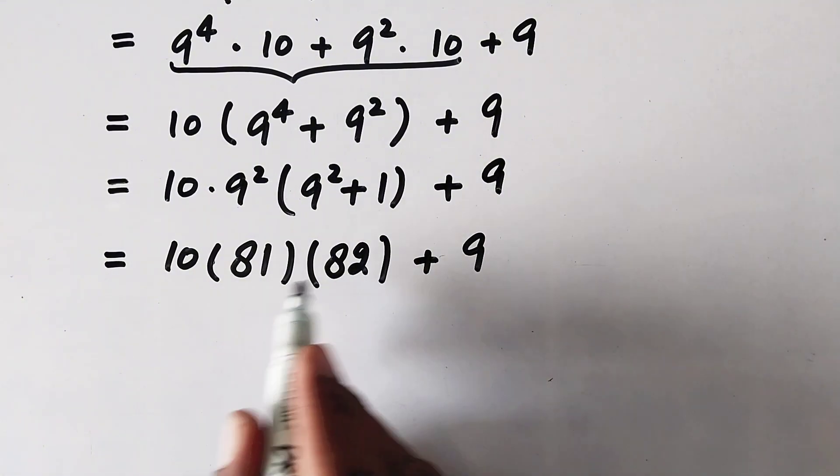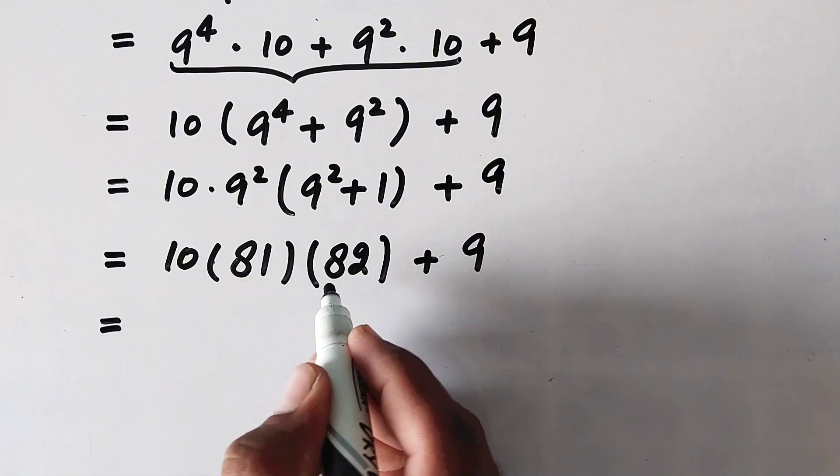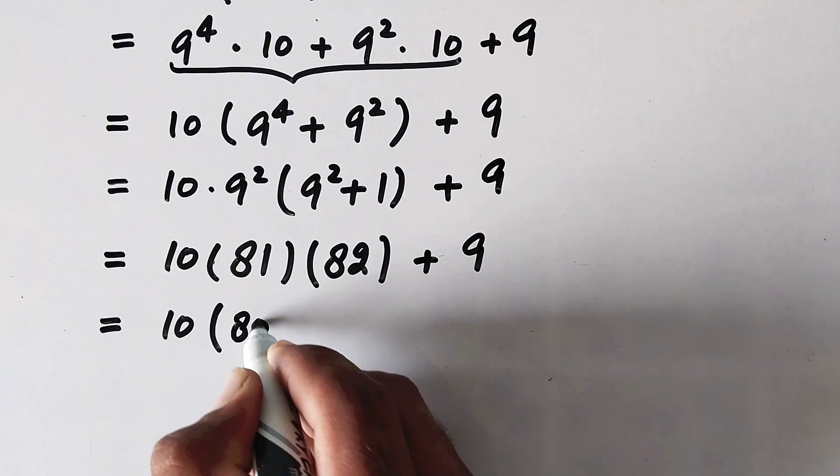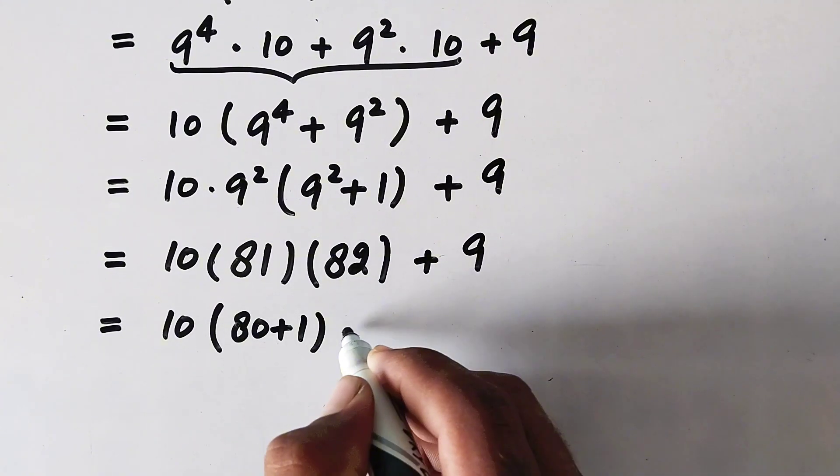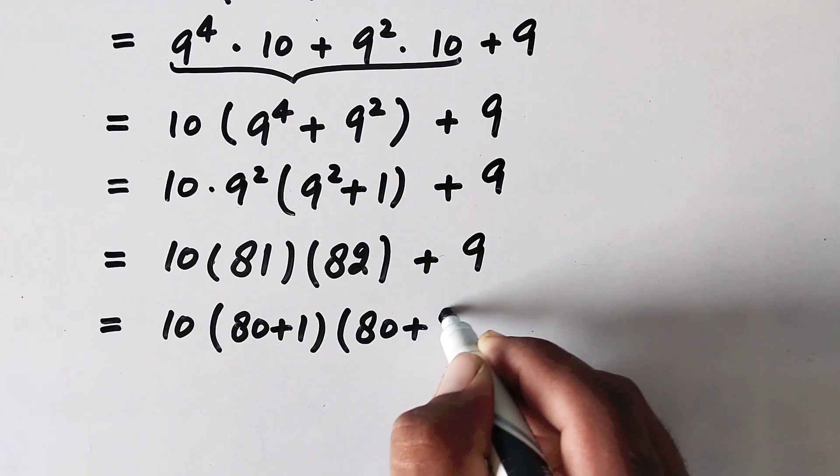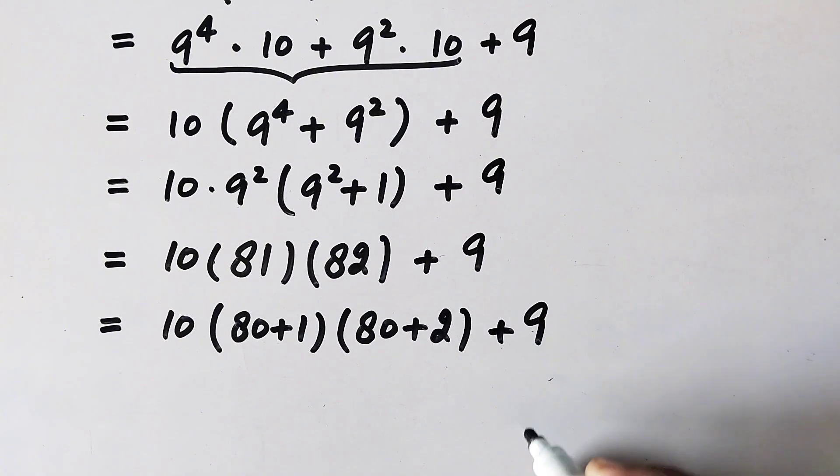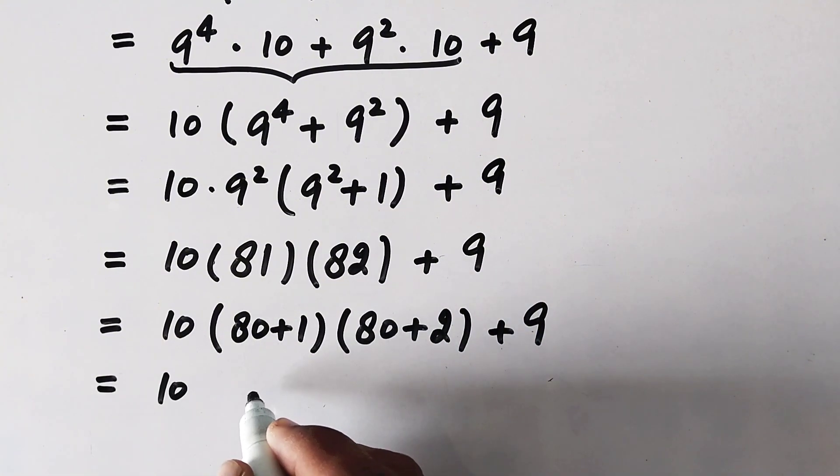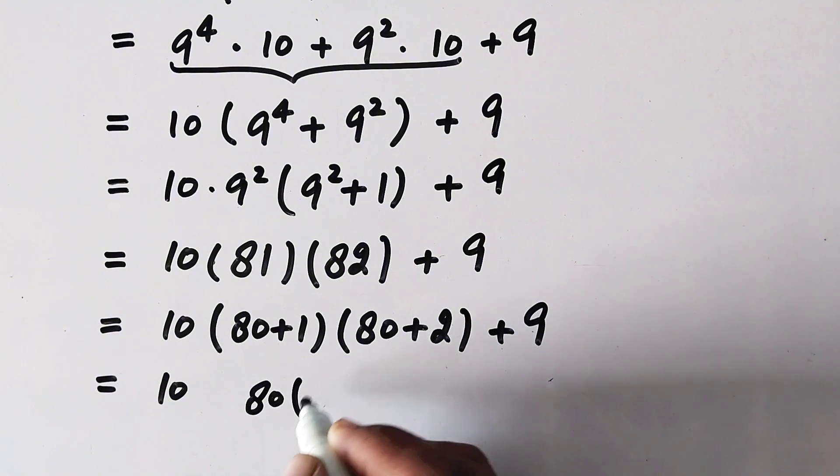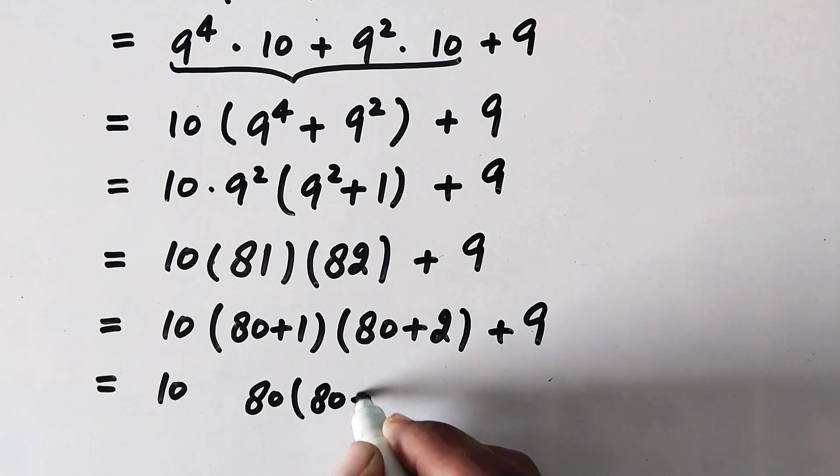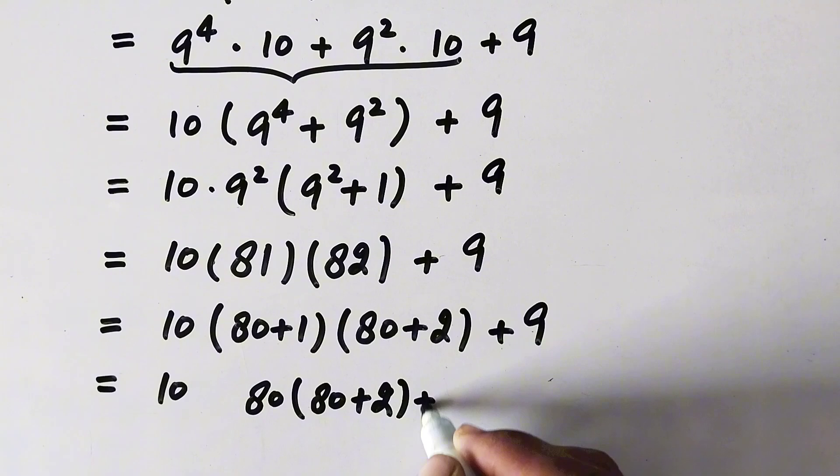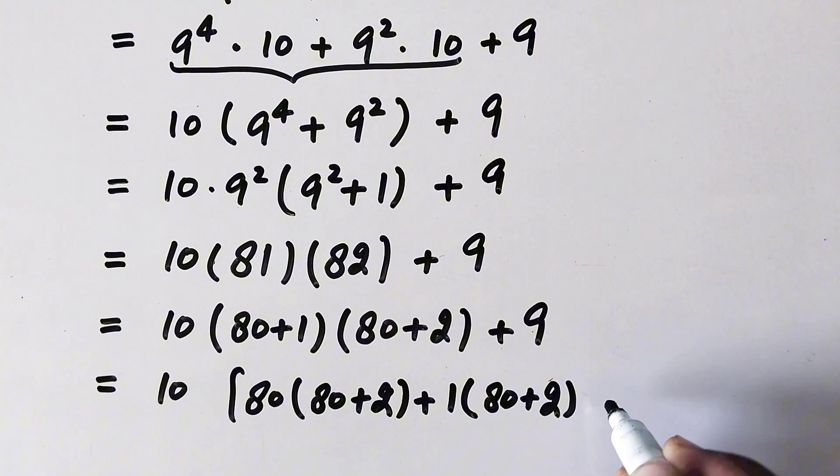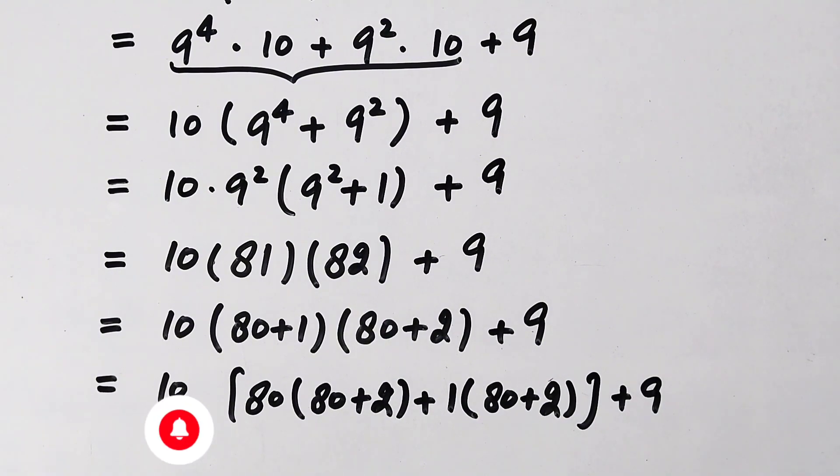Now we have to multiply these values, so to simplify our multiplication we will write these values this way: 10 times (80 plus 1) times (80 plus 2) plus 9. So now 10 times the multiplication will be 80 times (80 plus 2) plus 1 times (80 plus 2) plus 9.